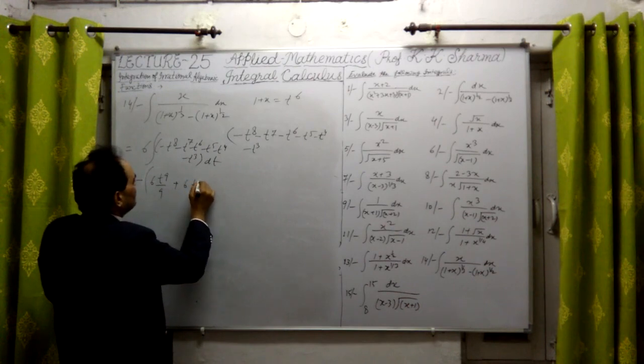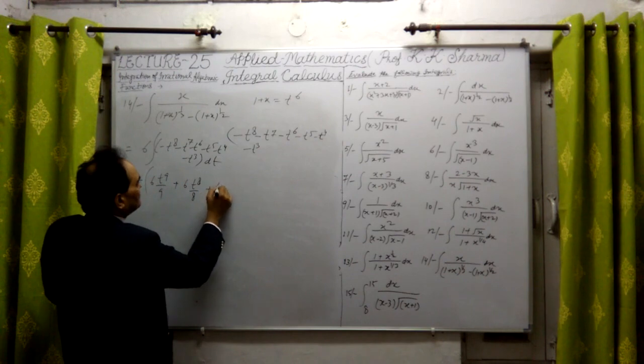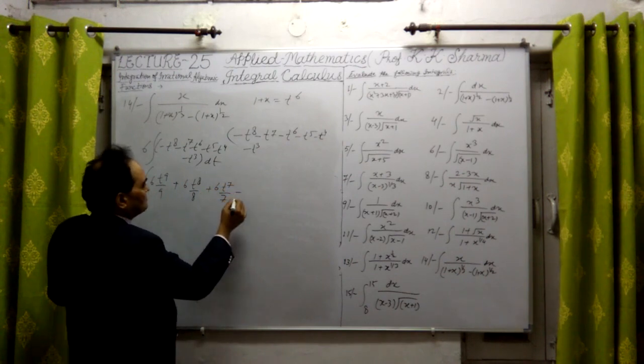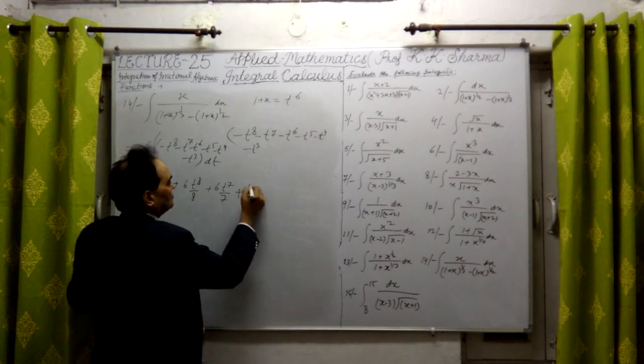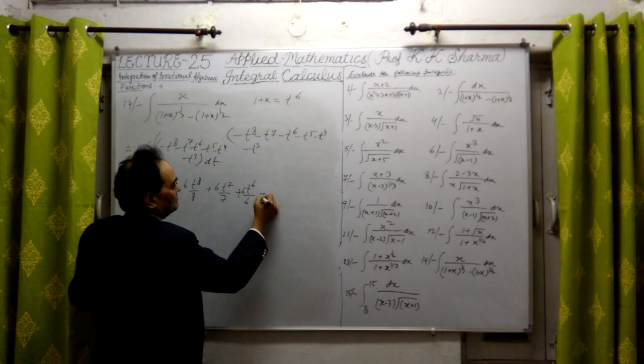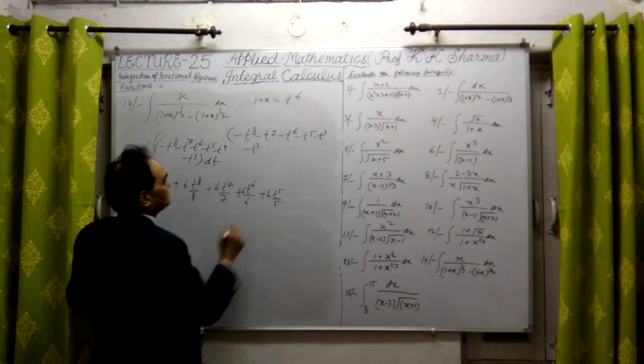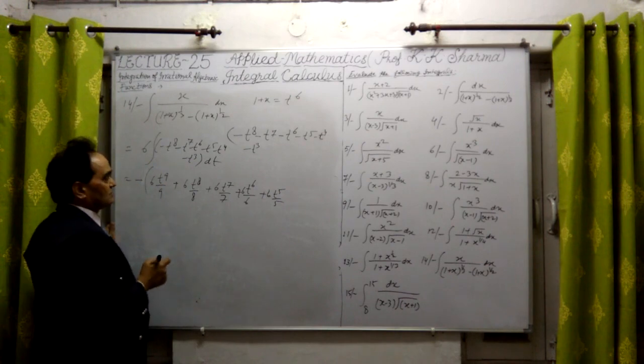And with T6 into T8 upon 8, it is V plus sign, 6 into T7 upon 7, plus T6 into T6 upon 6, T5 integrated, plus sign, 6 into T4, 5 upon 5. T4 is integrated like this.